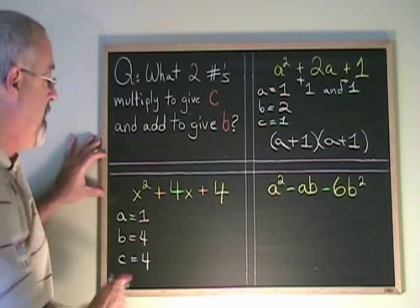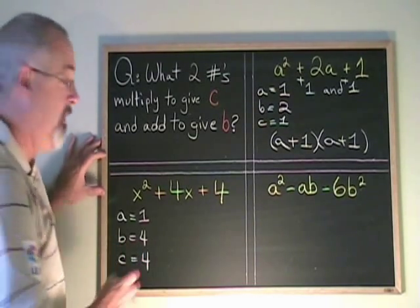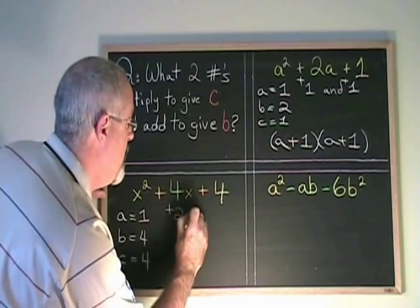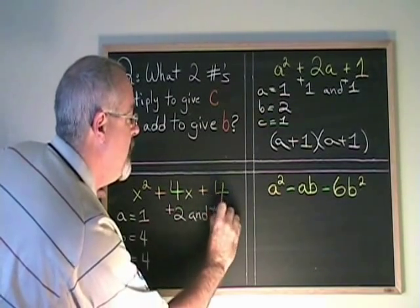What two numbers multiply to give 4 and add to give 4? They are positive 2 and positive 2.